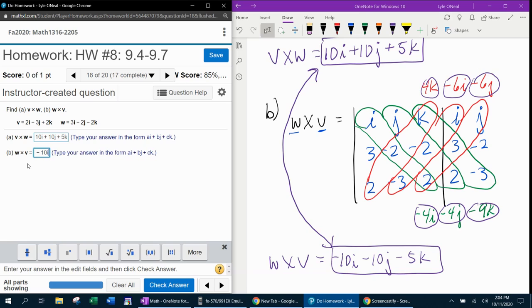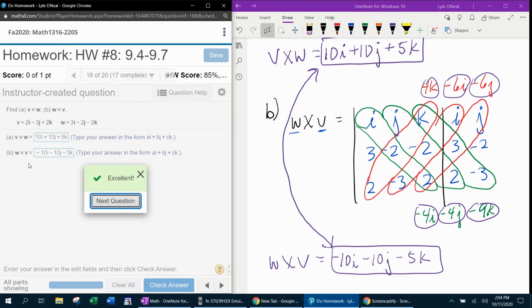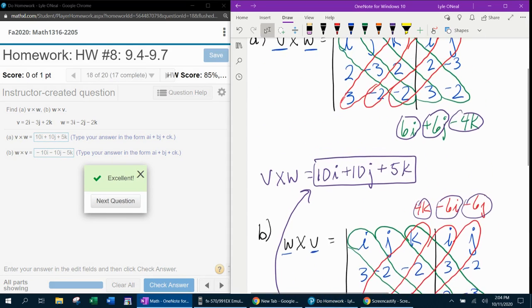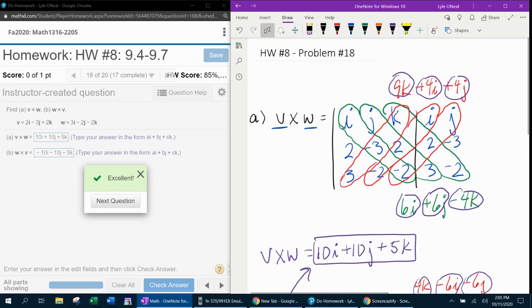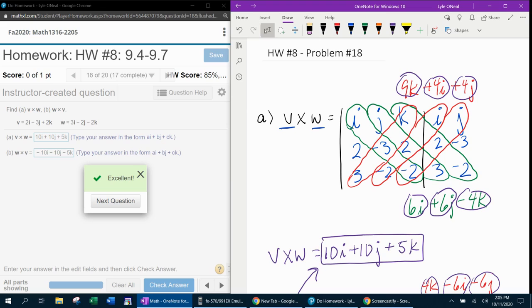Negative 10I minus 10J minus 5K. And we're done. I hope that was helpful. If you have any questions or comments, feel free to leave those in the comment section below. Or you can text me. And thanks for watching.